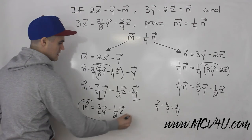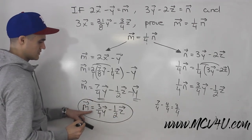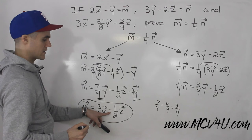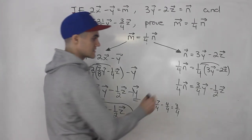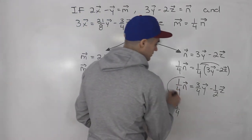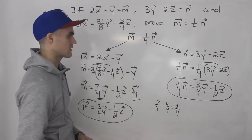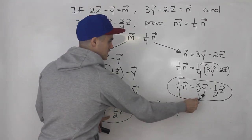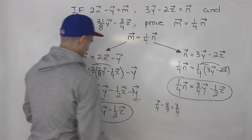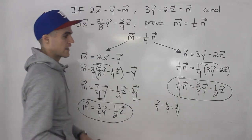So vector m equals 3 over 4 times vector y minus 1 half times vector z. And that is the exact same expression we got for 1 over 4 times vector n. Because these two expressions are equal, vector m is equal to 1 over 4 times vector n. And we proved it.